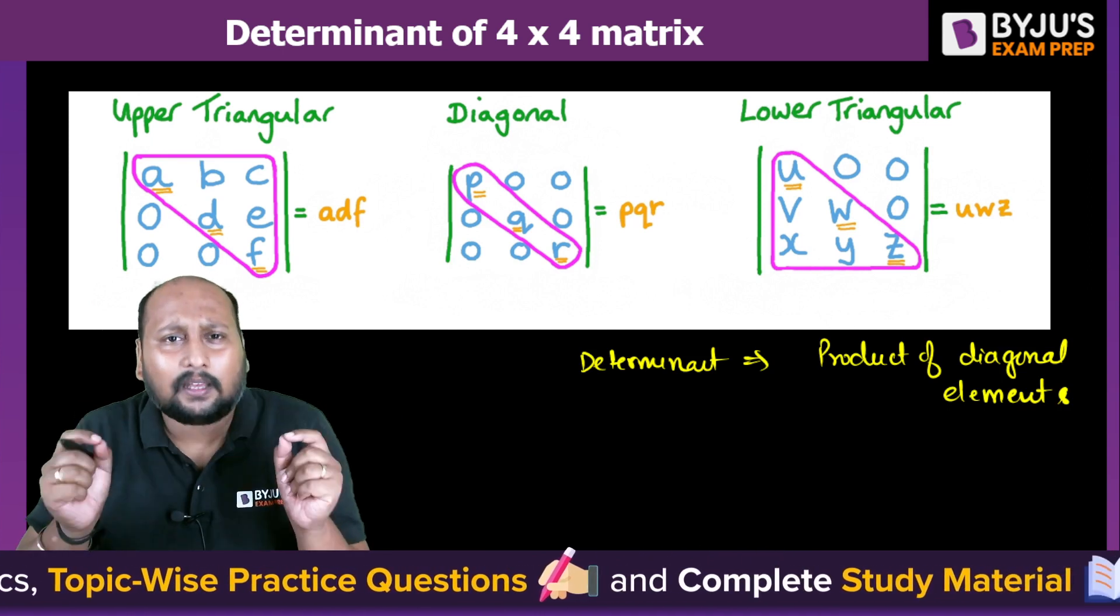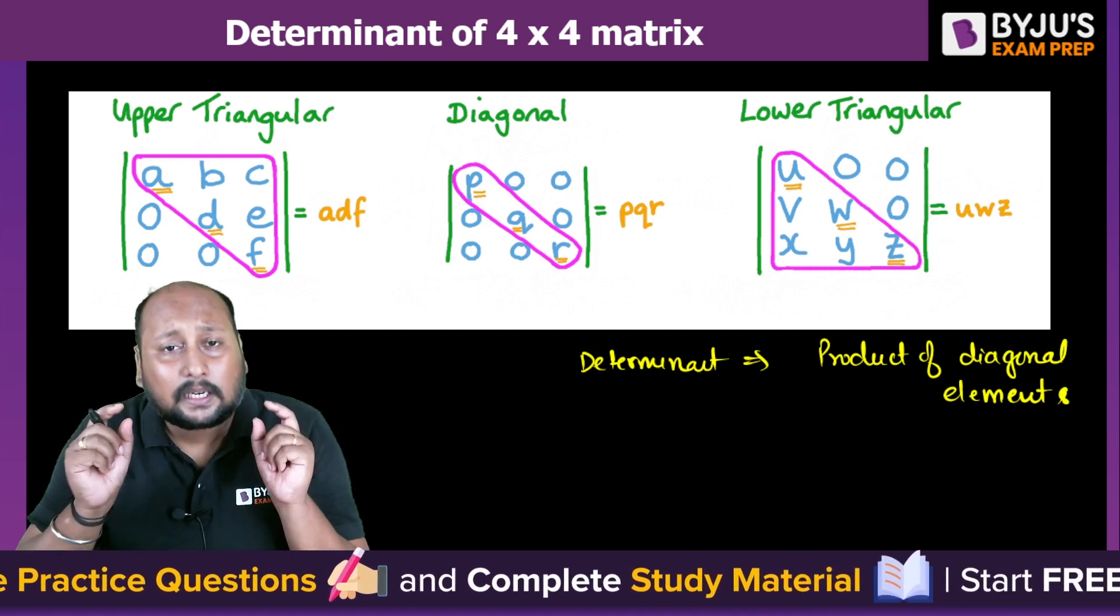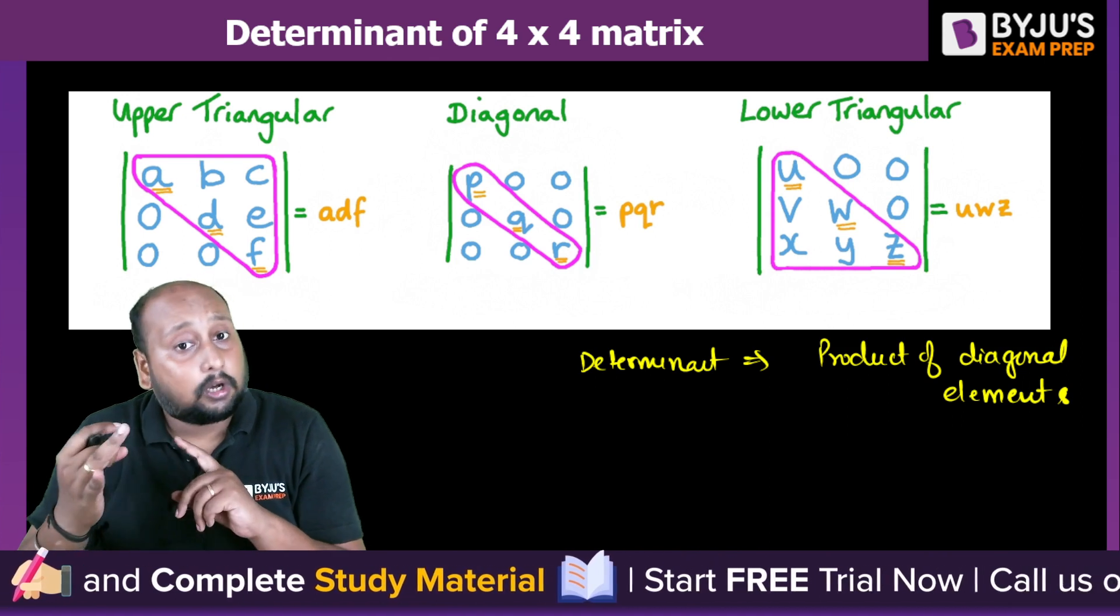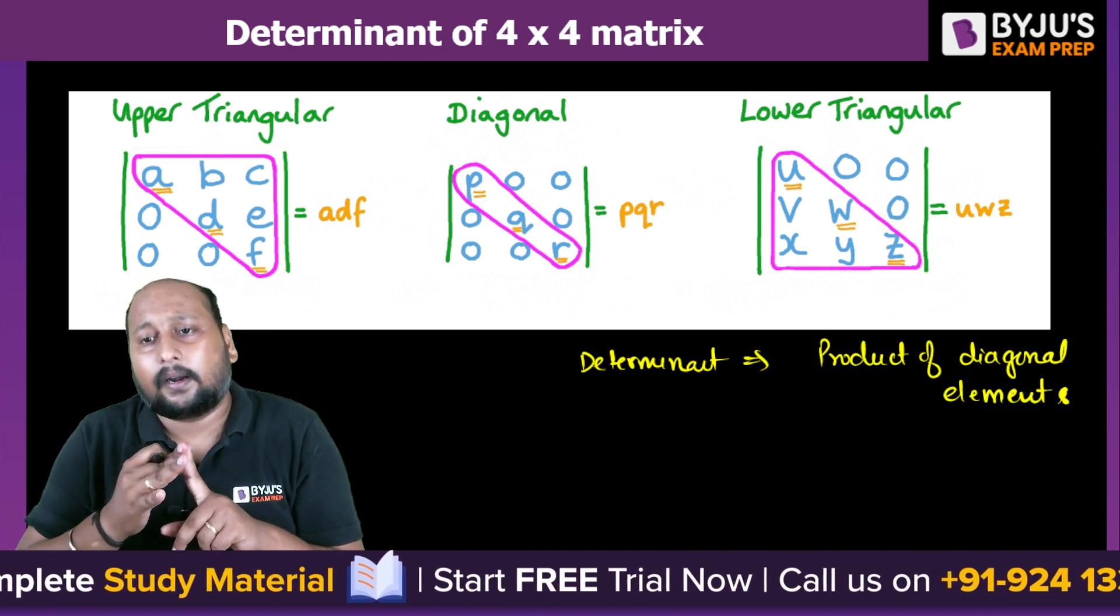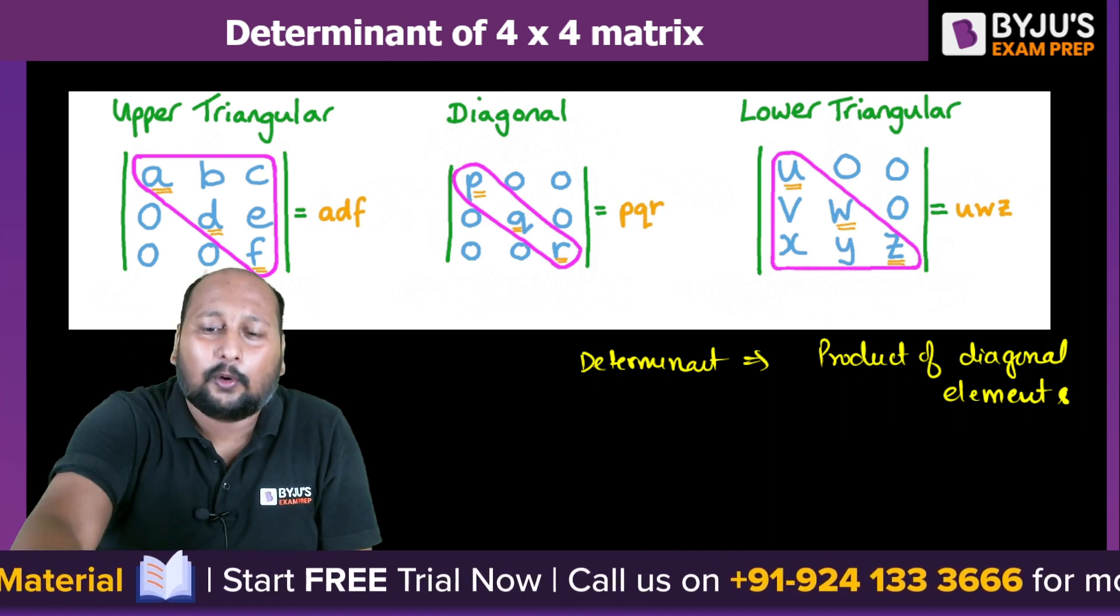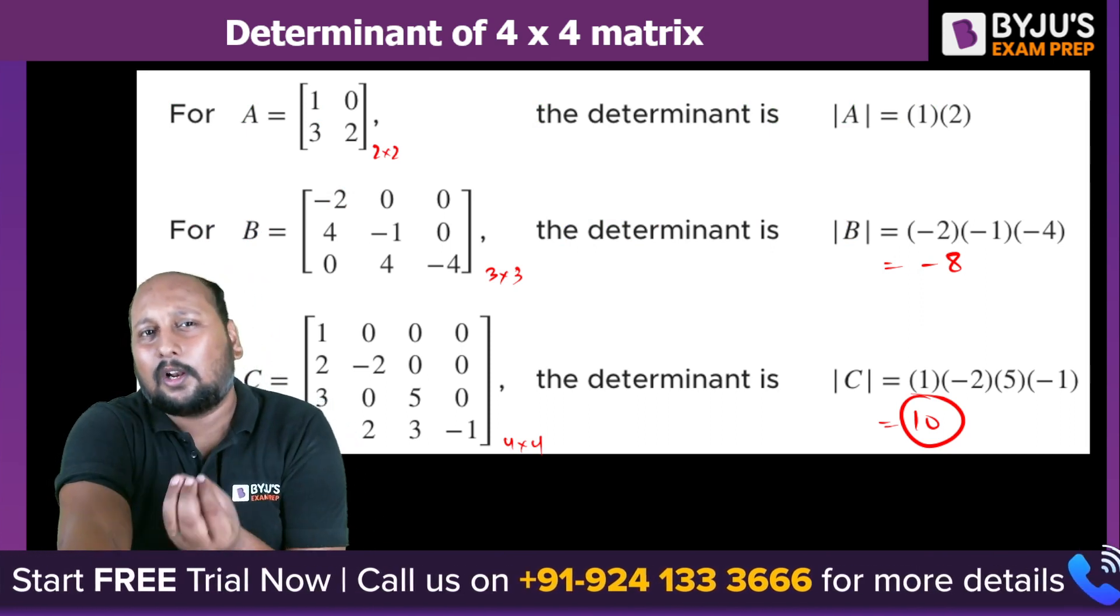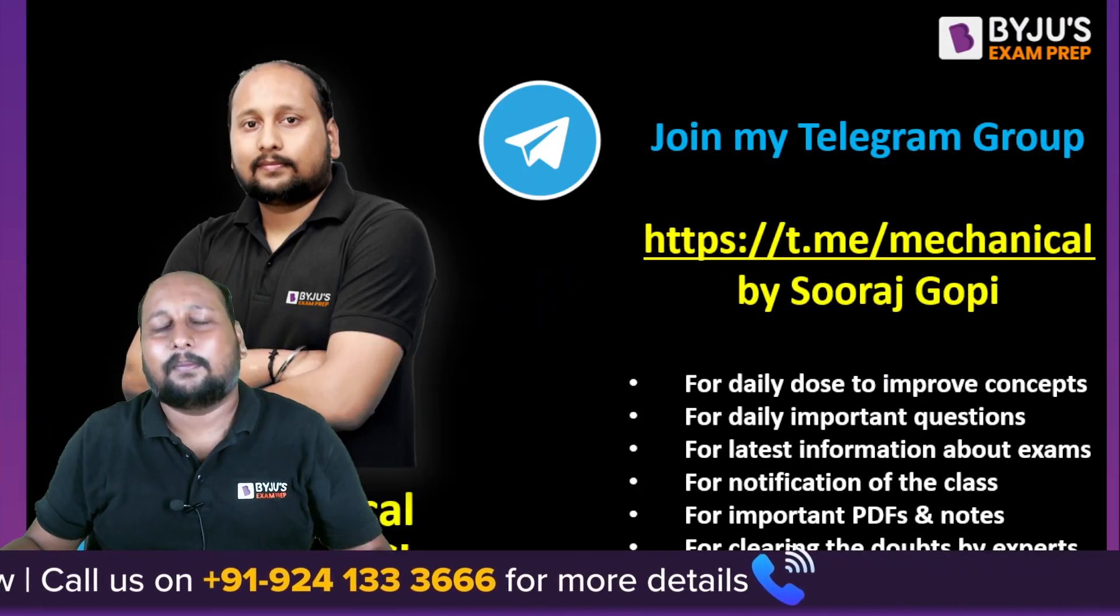The condition is it should be either an upper triangular matrix, or a diagonal matrix, or a lower triangular matrix. So I hope you have understood this very small awesome trick to calculate the determinant of the matrix of different sizes.